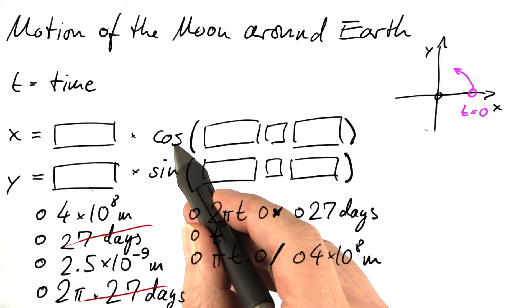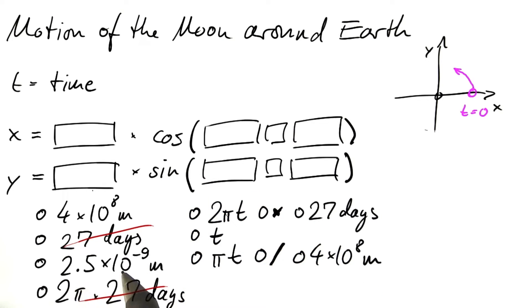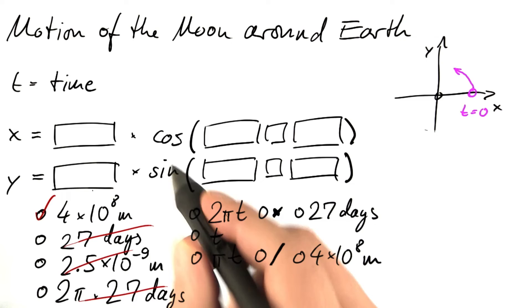The cosine and the sine range between minus 1 and plus 1. If we multiply by something times 10 to the minus 9 meters, we would be dealing with very, very tiny lengths. That's not what we are into here. It has to be the first one.